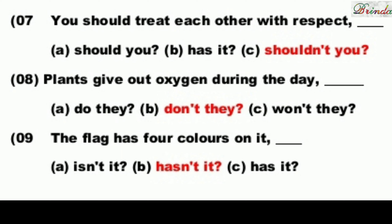Next: Plants give out oxygen during the day. There is no auxiliary verb, so turn it into the opposite — Plants don't give out oxygen — giving us 'don't'. Options: do they, don't they, won't they. The answer is: don't they.